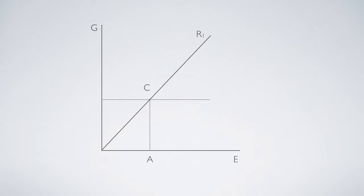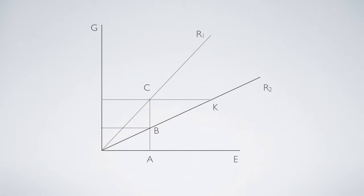When the terms of trade swings from R1 to R2, England pays CB amount of G as a tariff. If England does not pay the CB amount of G, it can receive CK amount of E.